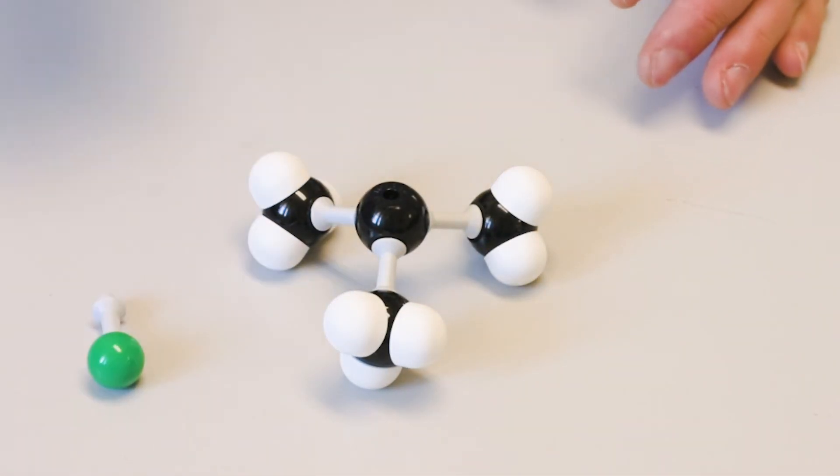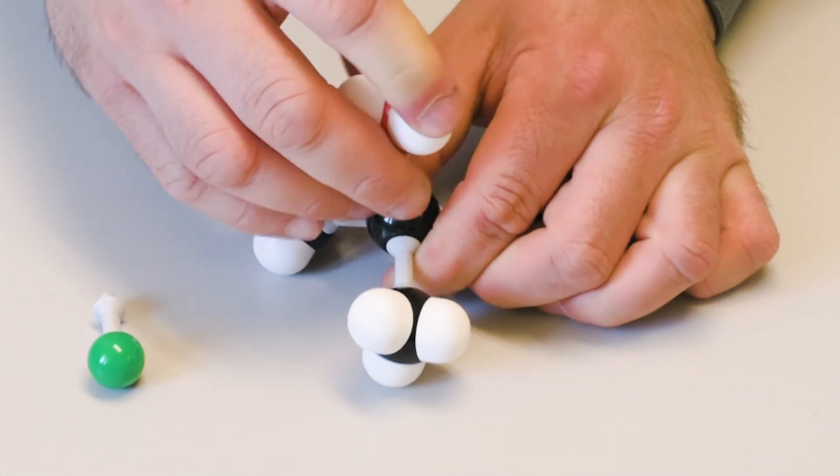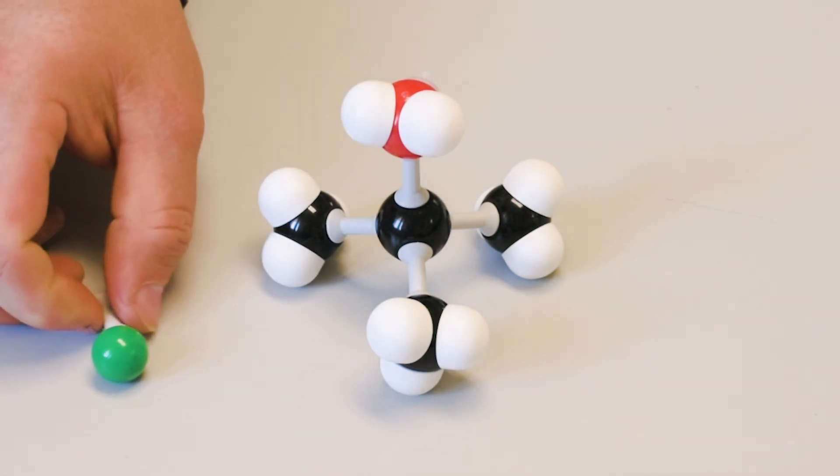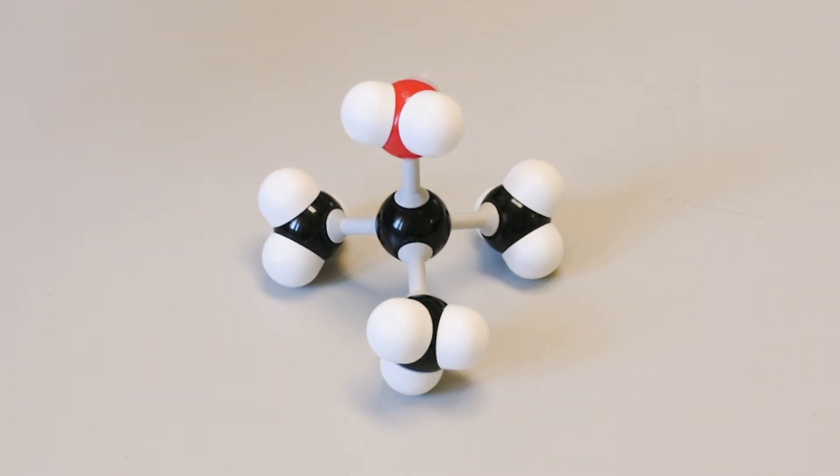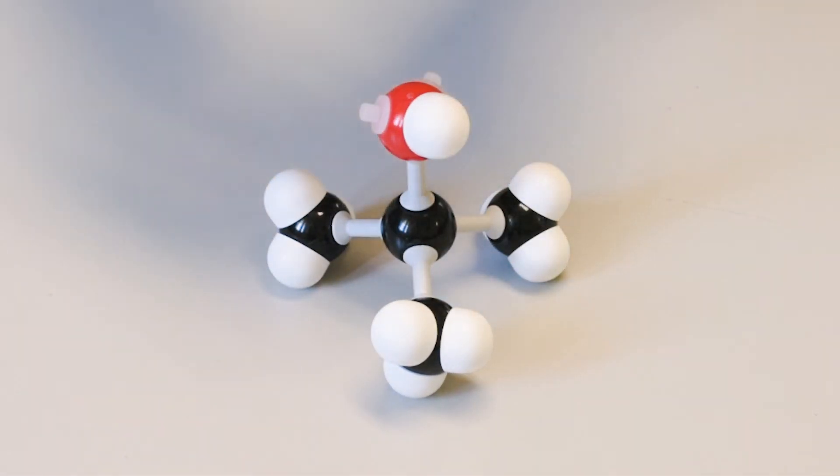In aqueous solution, the carbocation reacts with water to form a protonated alcohol. The halogen ion in solution attacks the more accessible proton, leaving a neutral alcohol as the product.